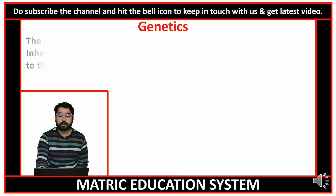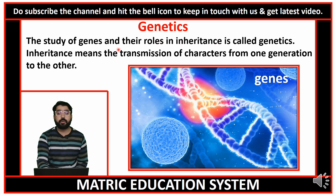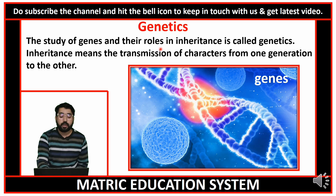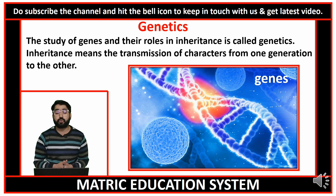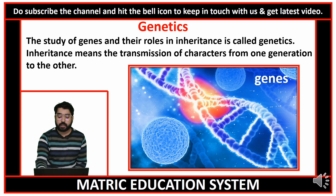Genetics: the study of genes and their role in inheritance is called genetics. Genes کا مطالعہ اور وراثت میں ان کا کردار genetics کہلاتا ہے۔ Gene، DNA کا وہ چھوٹا حصہ ہے جس کے پاس protein کی تیاری کے لیے ہدایات ہوتی ہیں۔ Inheritance کا مطلب ہے خصوصیات کا ایک نسل سے دوسری نسل میں، یا والدین سے بچوں میں منتقل ہونا — اور یہ genes کے ذریعے ہوتا ہے۔